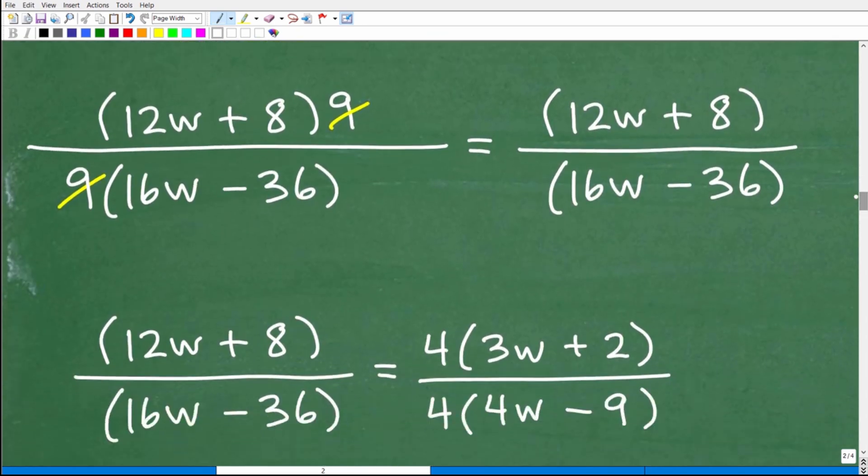Let's go ahead and continue the problem. We can definitely cross-cancel these nines. We'll cross-cancel them right there so these nines go away. That's why you don't want to multiply in just yet. You want to look for opportunities to start cross-canceling like factors just to kind of make this problem easier. When we do that, we are down to 12w plus eight over 16w minus 36.